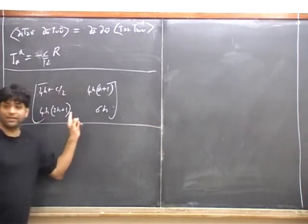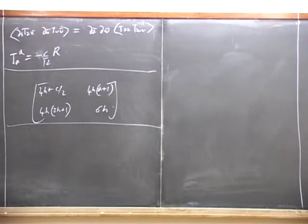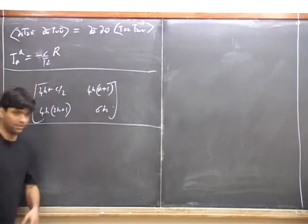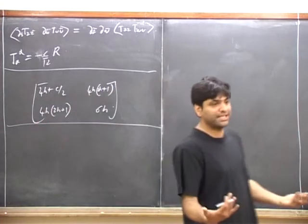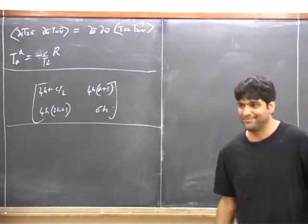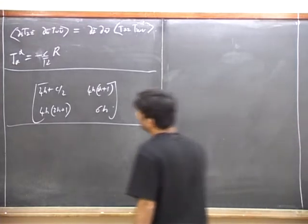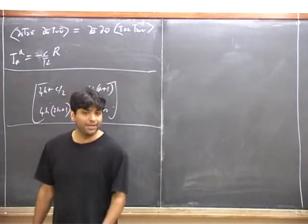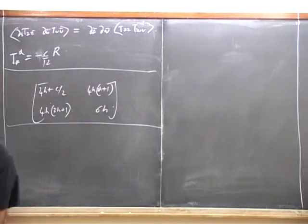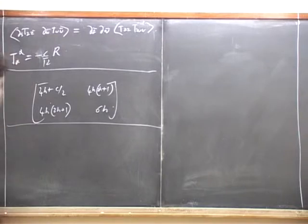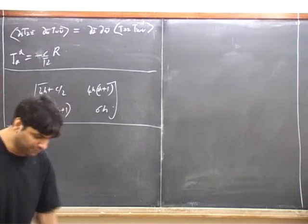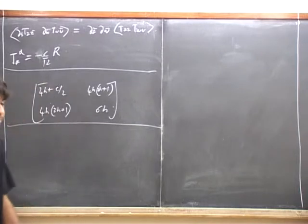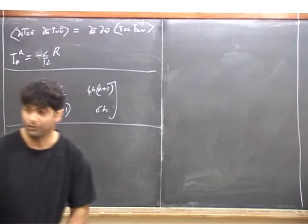As Jyothi says, all you need to know to get the result is that C must be greater than zero for unitarity. All you need to do is apply this to the special case of the identity, the vacuum. In which case, the positivity of C is simply the positivity of this matrix. This general result from a general operator will also be useful later in determining, for instance, negative norm states. It's an interesting exercise to compute the determinant of this matrix.